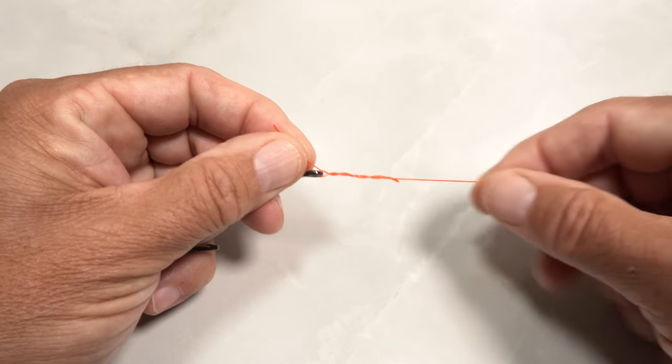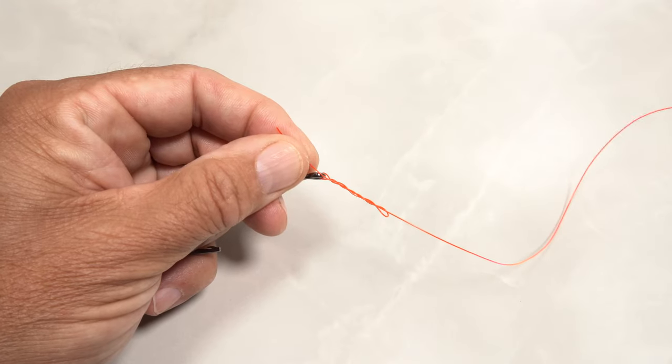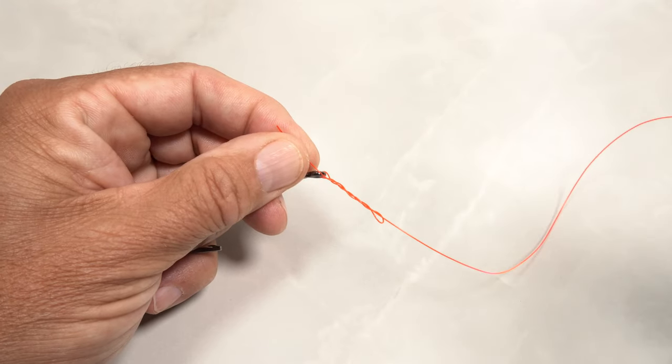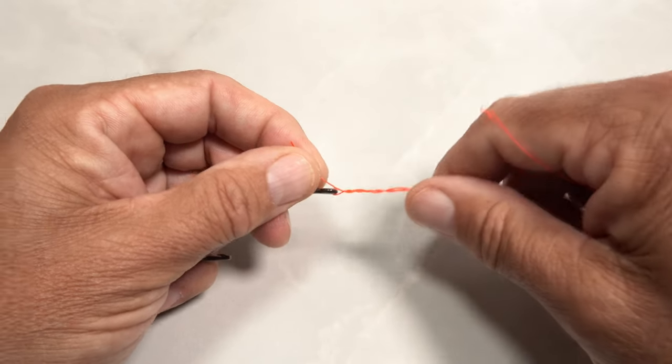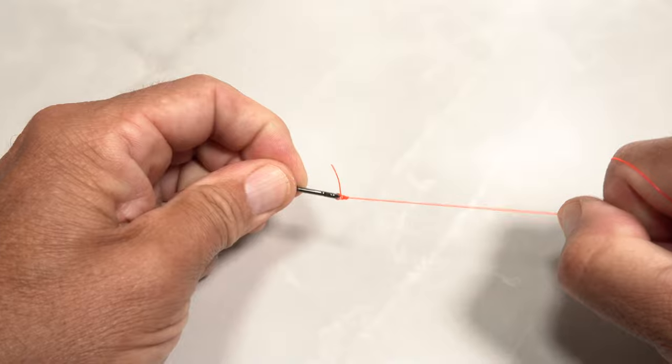At this point, it's critical to lubricate the knot with saliva, water, or if you have it, lip balm. A small amount is all that's needed. You can then get a good grip on the standing line and seat the knot firmly.